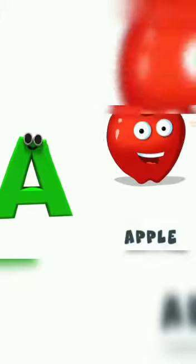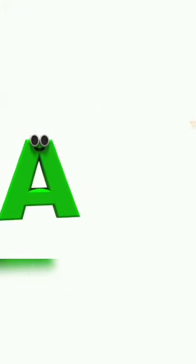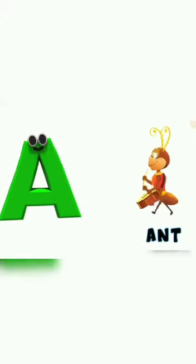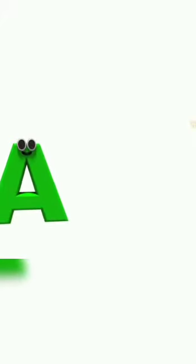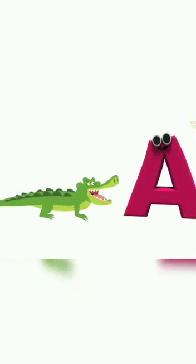So, let's start. A for apple — apple. A for ant — ant. A for animal — animal. A for armchair — armchair. A for alligator.